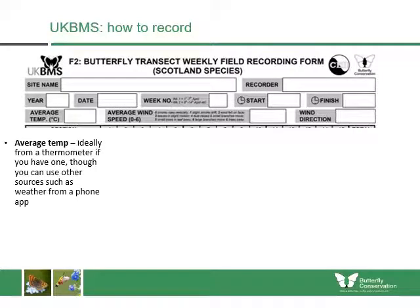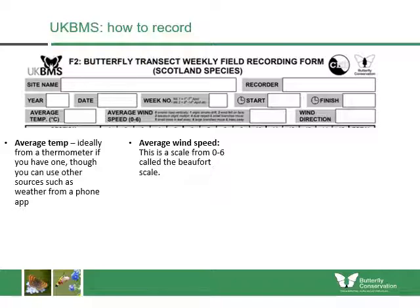The average temperature should be recorded — ideally with a thermometer, but you can use a weather app or forecast if you don't have one, though those will be less accurate. You should also record the average wind speed, because if it's very windy butterflies are less likely to fly.